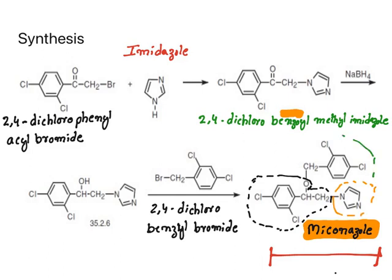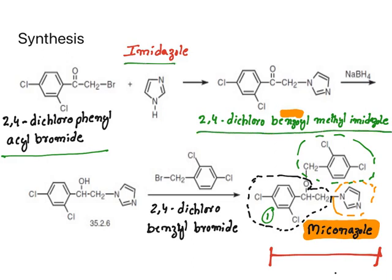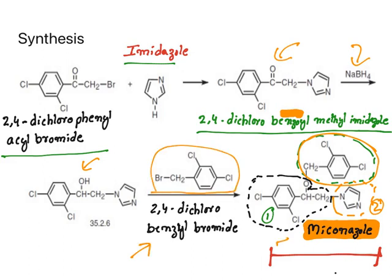For miconazole synthesis, use retrosynthesis: examine the final structure and identify the required pieces. First, 2,4-dichlorophenyl acyl bromide is condensed with imidazole to give 2,4-dichlorobenzyl methylimidazole. The ketone is reduced to a hydroxy group using sodium borohydride. Then 2,4-dichlorobenzyl bromide is attached via condensation to give miconazole. Retrosynthesis means breaking the final product into pieces and assembling each piece.